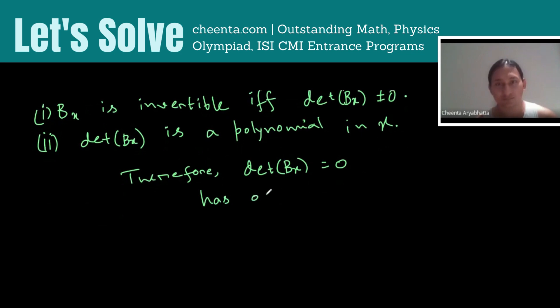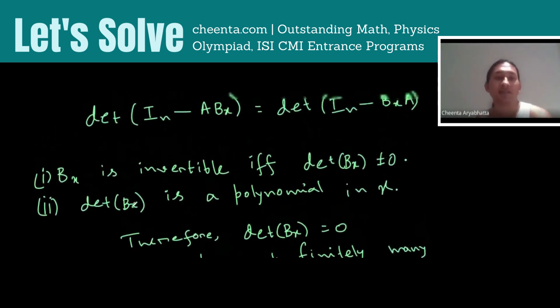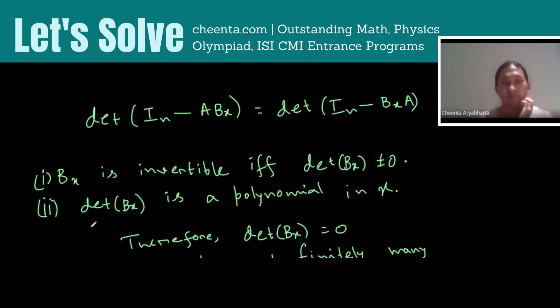So which means using part one which means BX is not invertible only for finitely many X. For all other values of X which are infinitely many these two are equal. This side and this side are equal. Note that both sides are polynomials in X. Therefore, if they are equal for infinitely many values of X, they are actually equal because two polynomials cannot be equal for infinitely many values of the variable unless they are always equal.